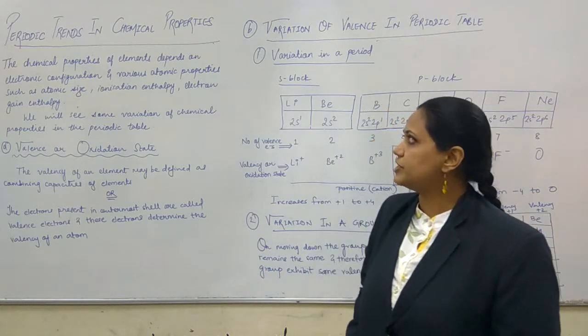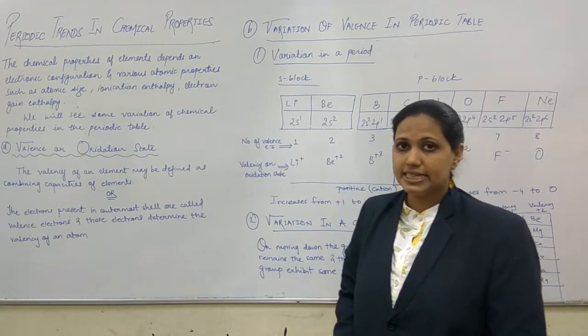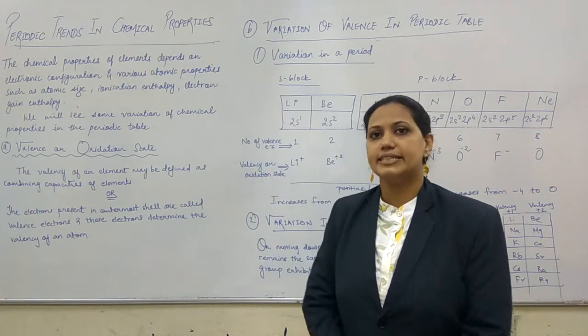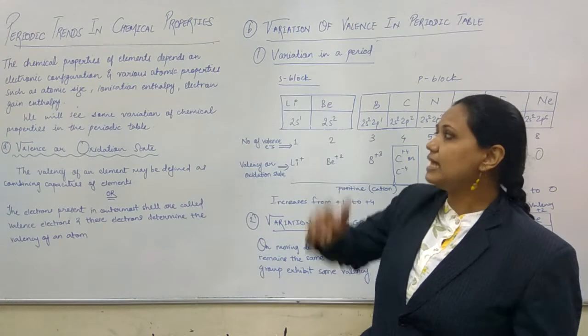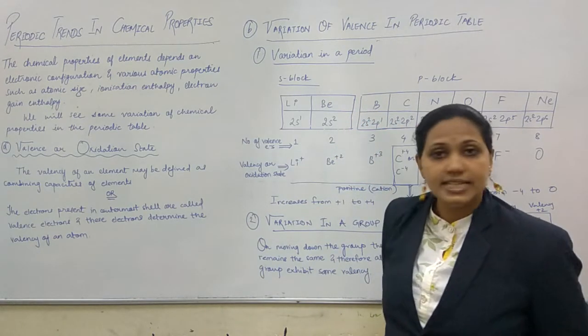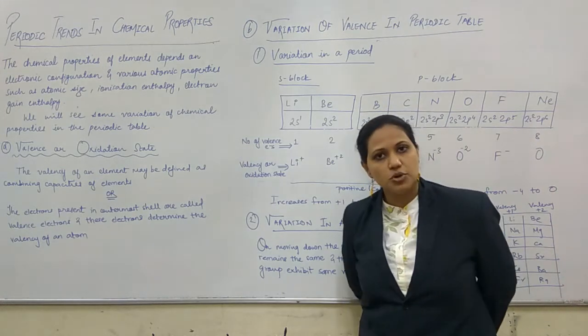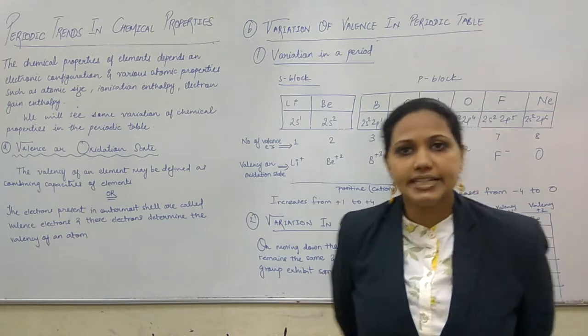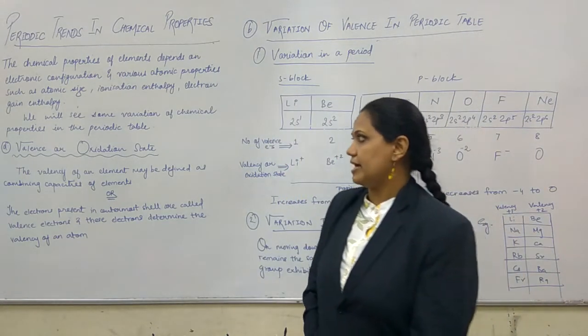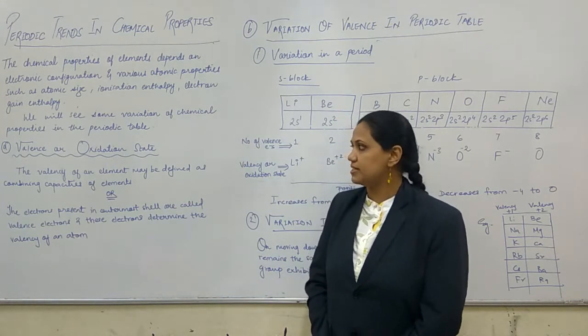The chemical properties of elements depend on electronic configuration and various atomic properties such as atomic size, ionization enthalpy, and electron gain enthalpy. We will see some variation of chemical properties in the periodic table.